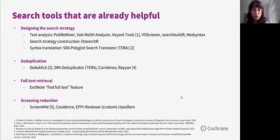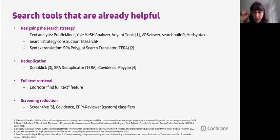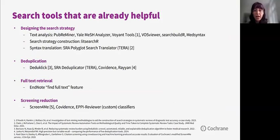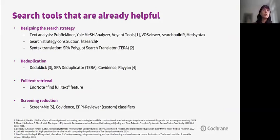For supporting the search process of systematic reviews, information specialists have been using several tools that have led to efficiency gains in the past five years. Some of these tools are newer than others, and while some are based on machine learning, not every automation tool uses AI. Among the tools that Irma and I and many colleagues have been using for designing search strategies...